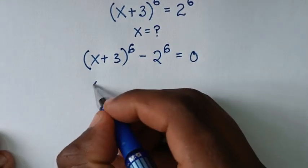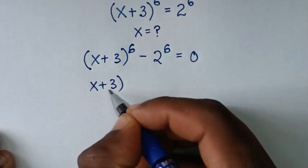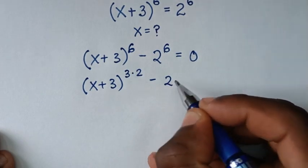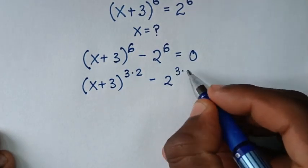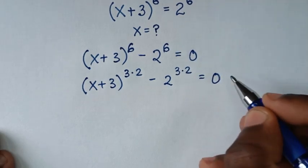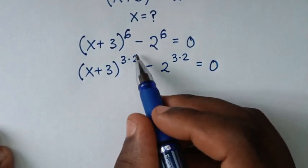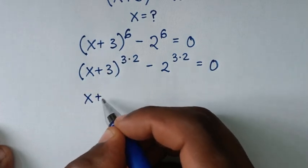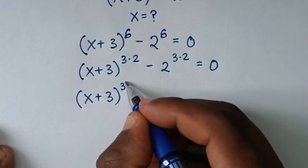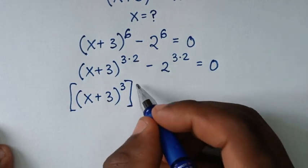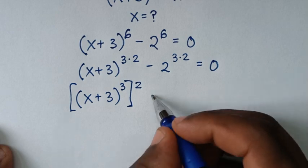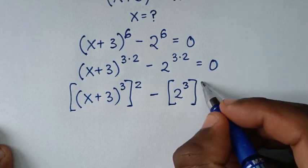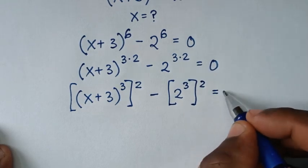In the next step, (x + 3)^6 is the same as power of 3 times 2, and 2^6 is the same as power of 3 times 2. We take the square power outside the bracket, so it becomes [(x + 3)^3]^2 minus [2^3]^2 is equal to 0.